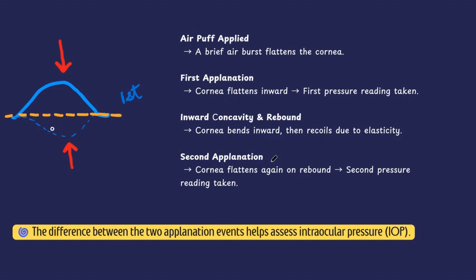From the flat surface, the cornea becomes concave, then bounces back due to its elastic nature. As it returns from concavity to convexity, it again passes through a flattening phase — the second applanation — where the second pressure reading is taken. The difference between these two applanation pressure readings gives us corneal hysteresis, which is an important biomechanical property and a measure of the viscoelastic function of the cornea.